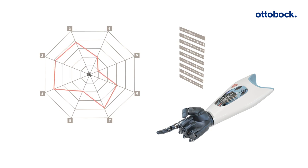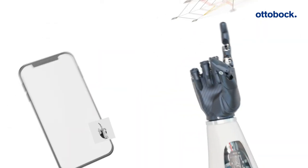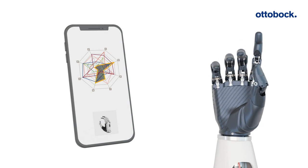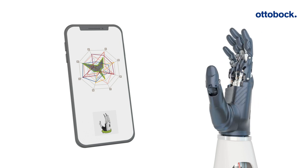The MyoPlus app is the central interface between the user and the control unit. It basically serves as a window into the prosthesis, visualizing the hidden movement patterns in the residual limb.